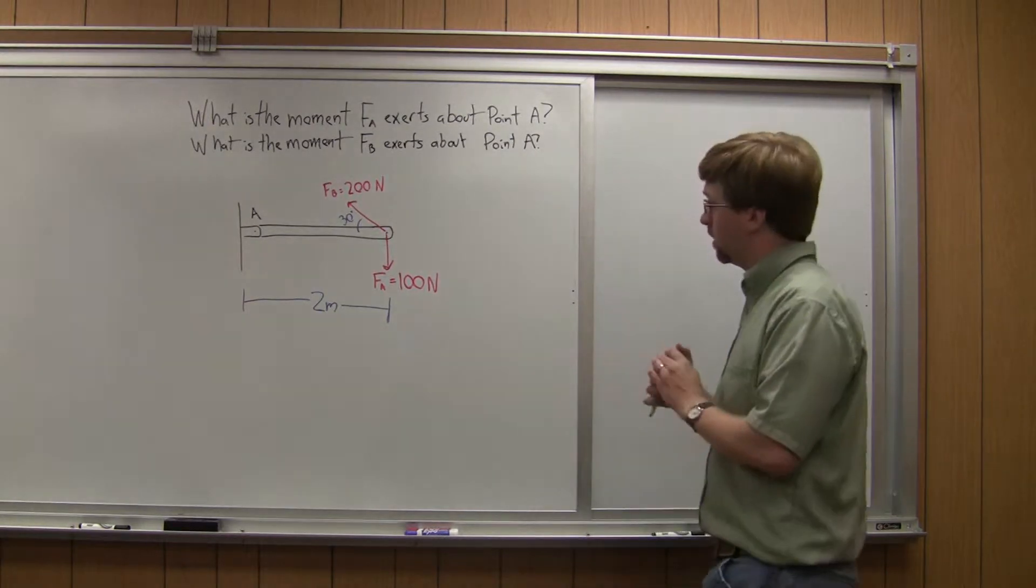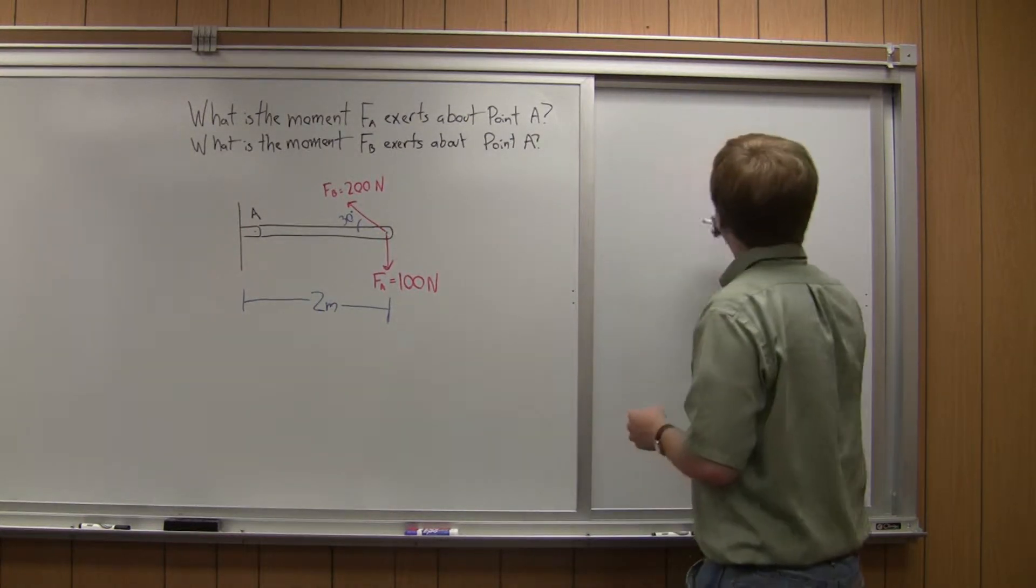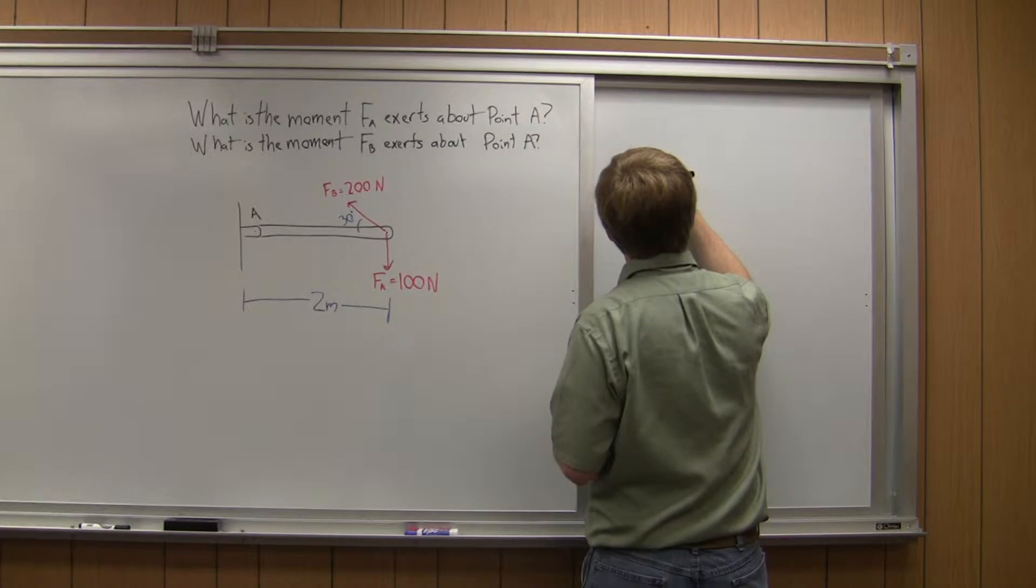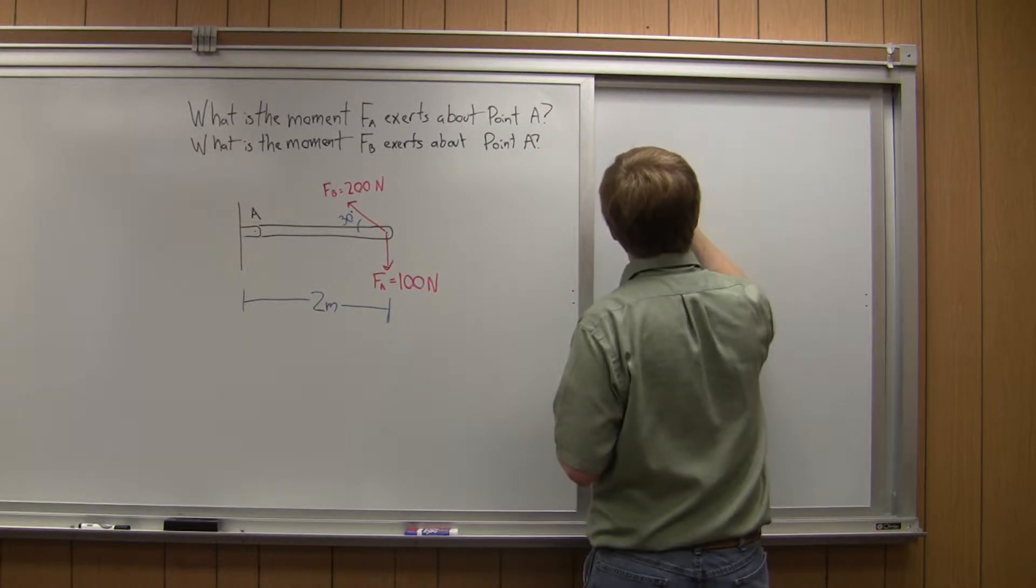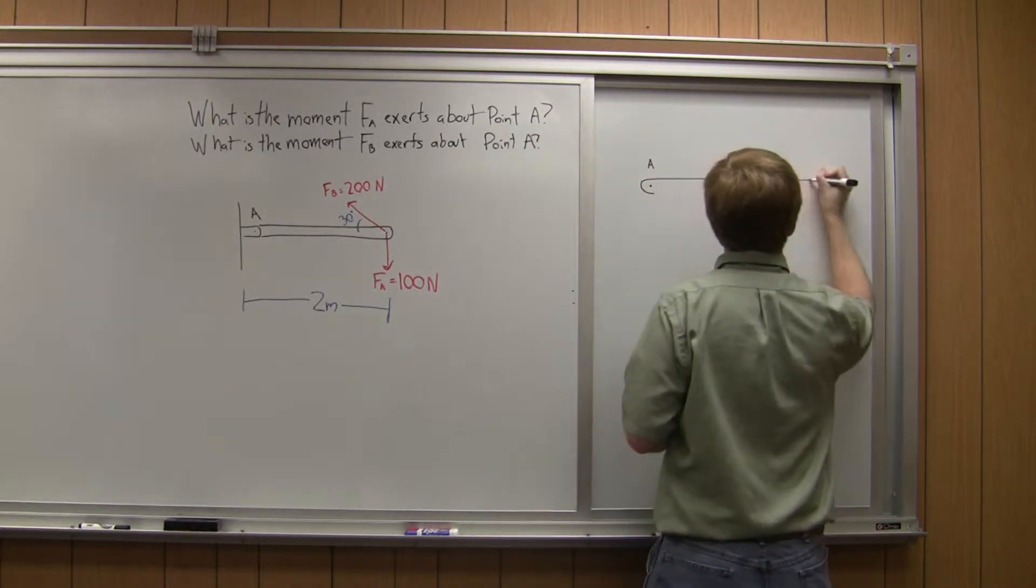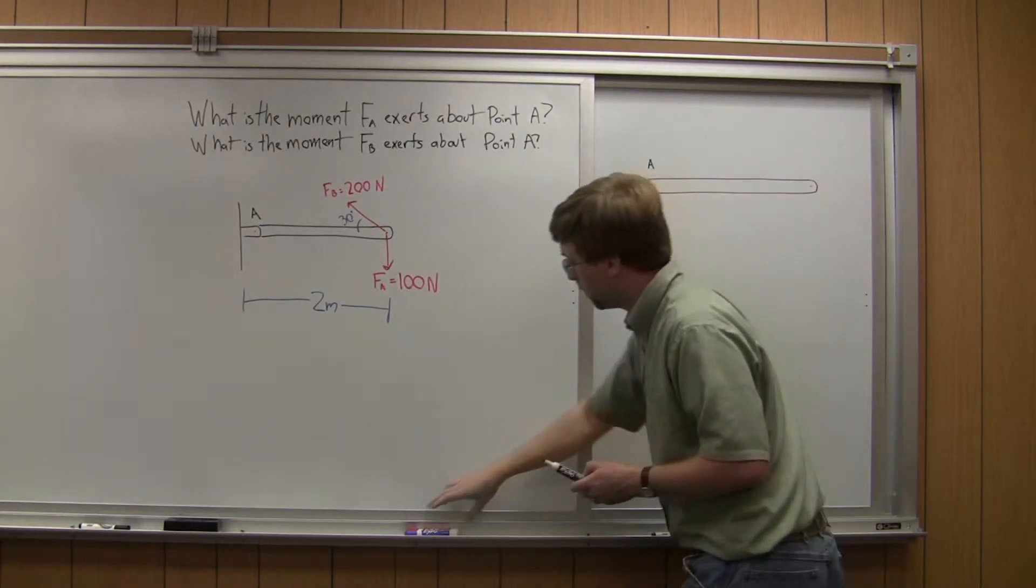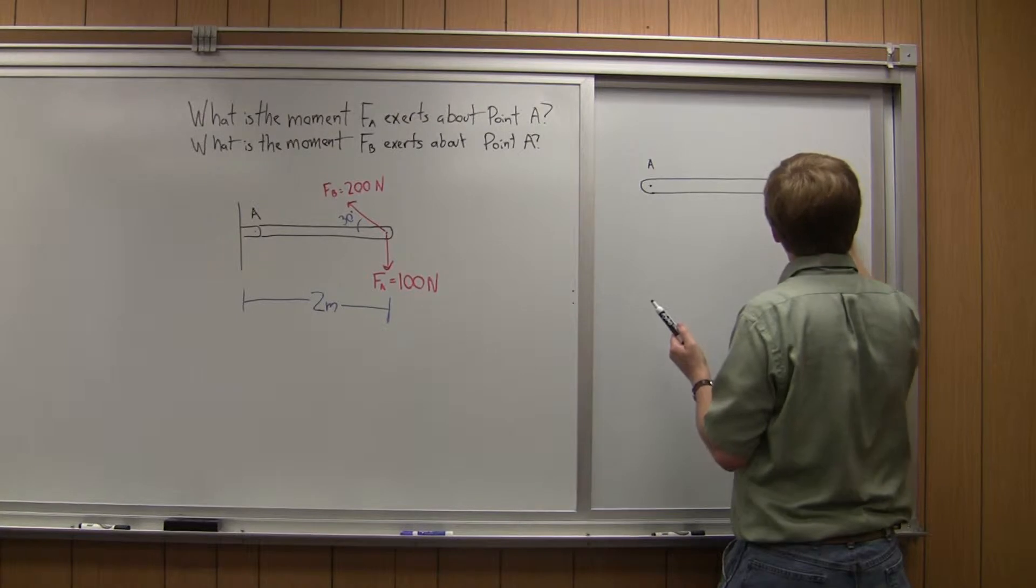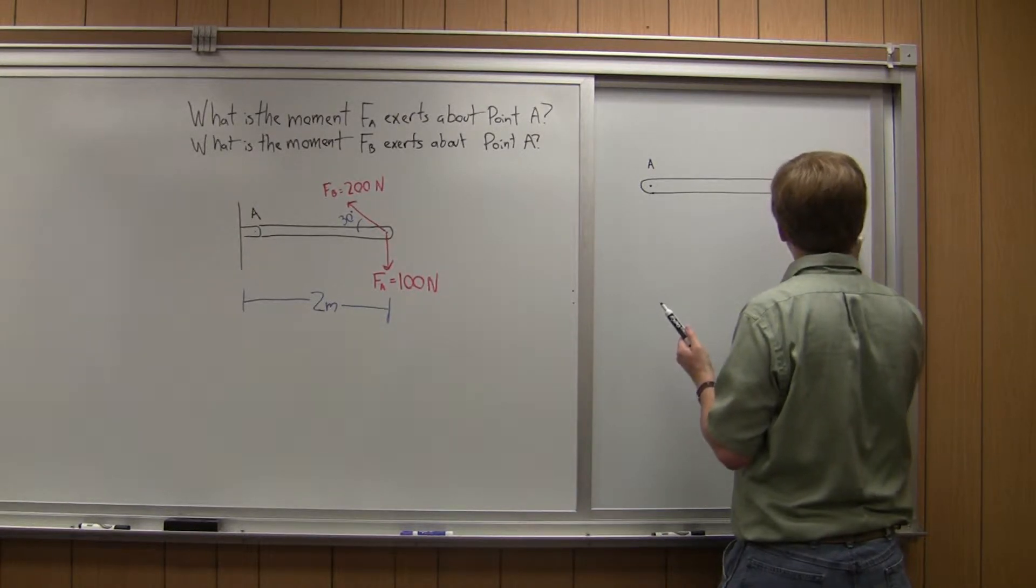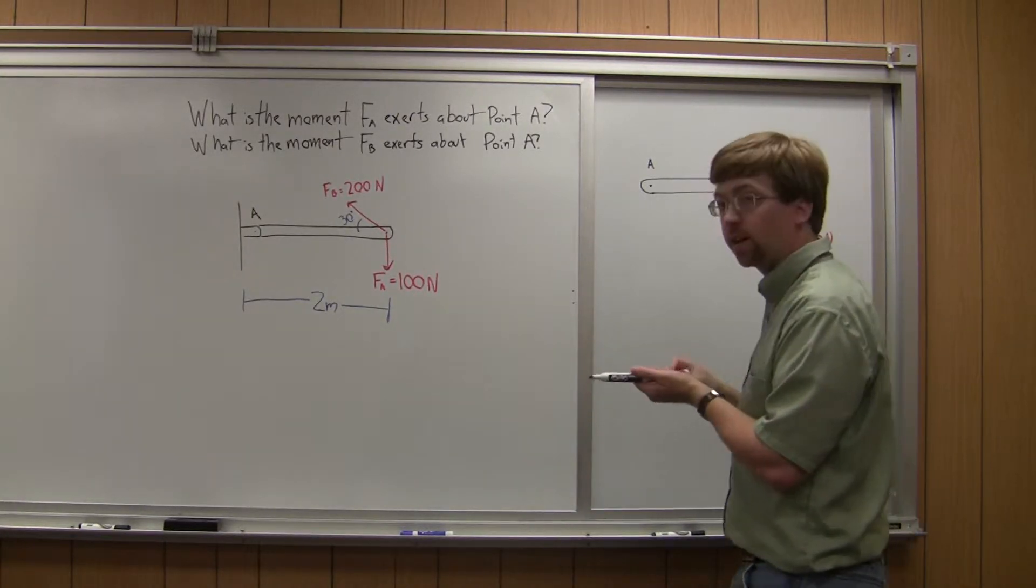First, we're going to do the moment of force A. So with this, we've got point A over here. We've got a two-meter-long beam. And our force A is 100 newtons, straight down, like this.